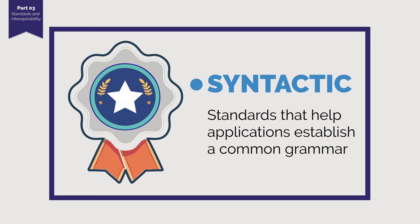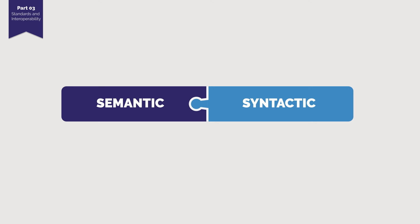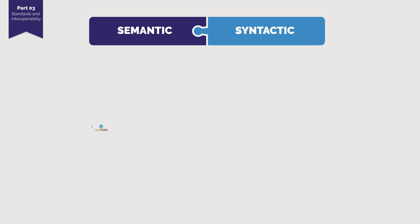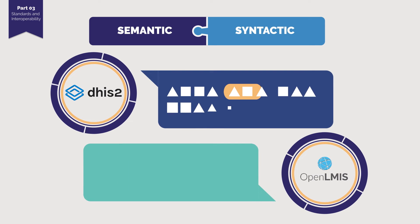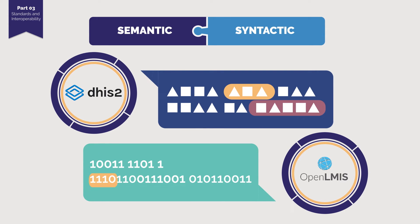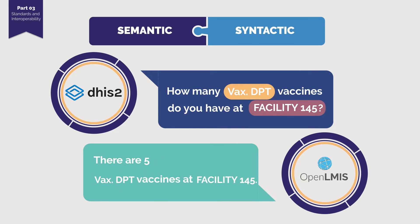So the software development team explained to Lucy and Isaac that these applications also need to have common grammar to communicate meaning. Standards that do this are known as syntactic standards — they help you determine how the words fit together. The software development team shows Lucy and Isaac what happens when they have both semantic and syntactic standards. With both sets of standards in place, the DHIS2 and OpenLMIS applications can share data automatically and seamlessly. So when DHIS2 asks OpenLMIS how many vax.dpt vaccines there are at Facility 145, OpenLMIS can provide DHIS2 with that data, responding that there are five vax.dpt vaccines at Facility 145.